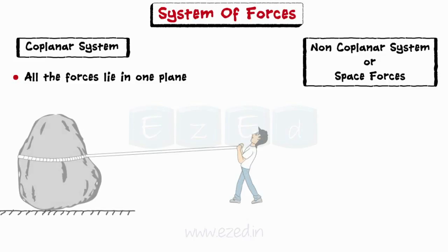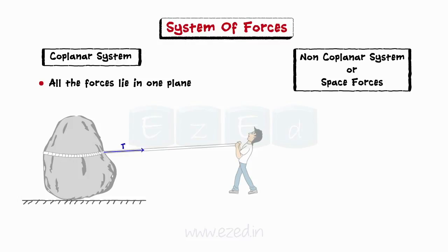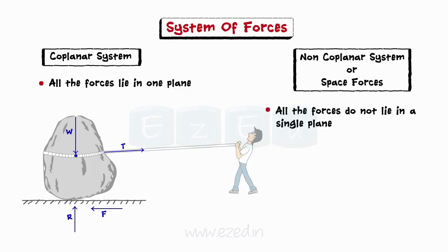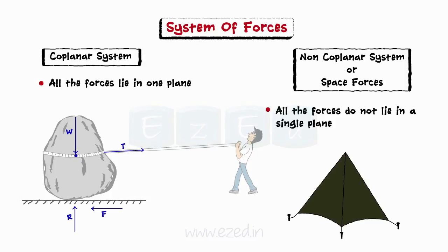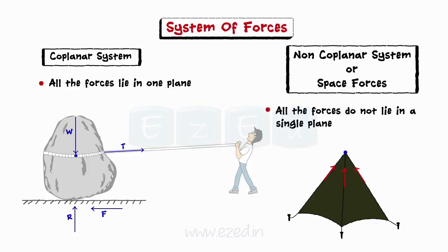Consider the man pulling the stone with a rope. There are a number of forces acting on the stone: the tension in the rope, the normal reaction offered by the surface, the frictional force, and the self-weight of the stone acting downwards. All these forces lie in the same plane, so they form a coplanar force system. When the forces acting in a system do not lie in a single plane, they are called non-coplanar forces or space forces. Consider the circus tent — forces acting along the ropes and the self-weight along the central pole all lie in different planes, forming a non-coplanar force system.